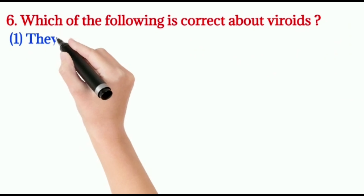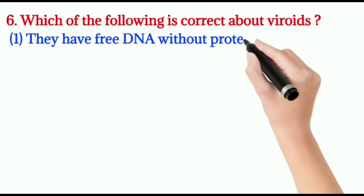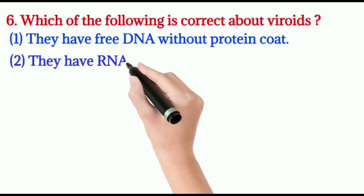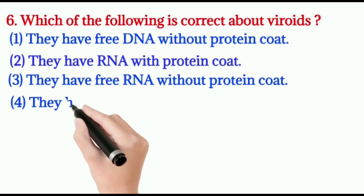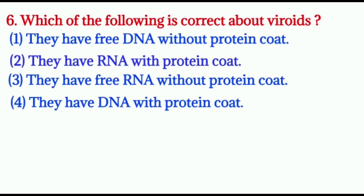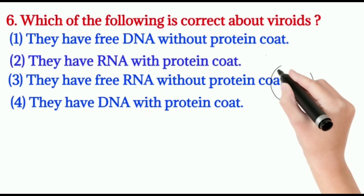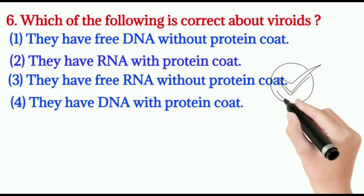Question number six: which of the following is correct about viroids? Options include: free DNA without protein coat, DNA with protein coat, or free RNA without protein coat. Viroids actually have free RNA without a protein coat — that is the right answer.